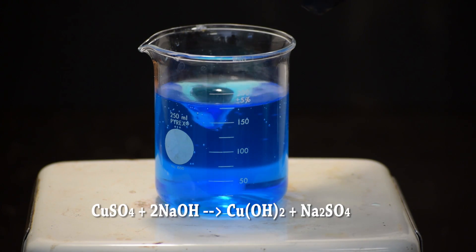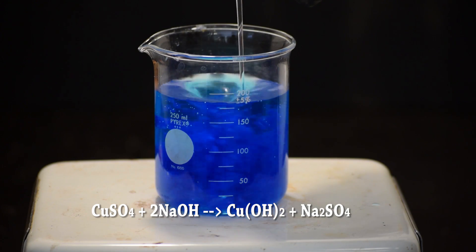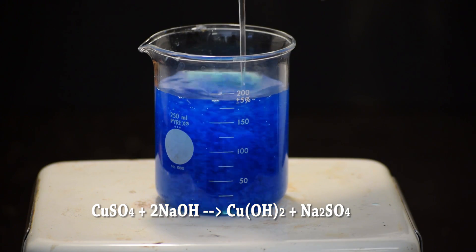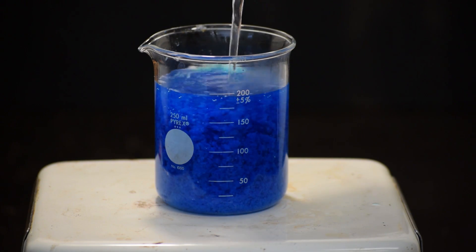When ready, add the sodium hydroxide solution to the copper sulfate. A dark blue precipitate of copper hydroxide will form.